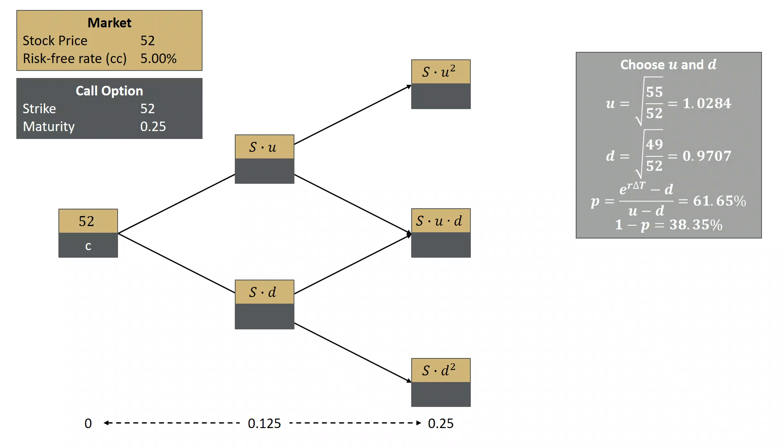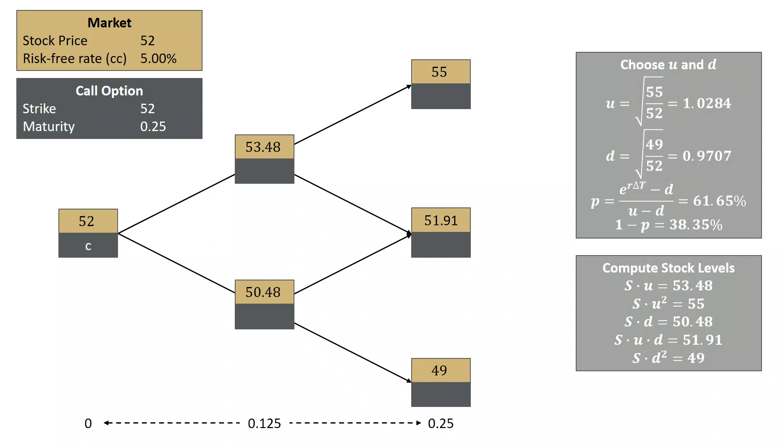And now we can simply work through and compute all the stock levels. So S times U is 53.48, S times U squared is 55, S times D is 50.48, S times U times D is 51.91, S times D squared is 49. So now we have our tree.